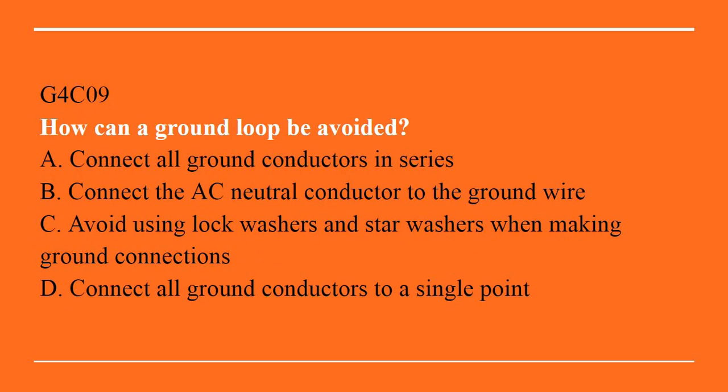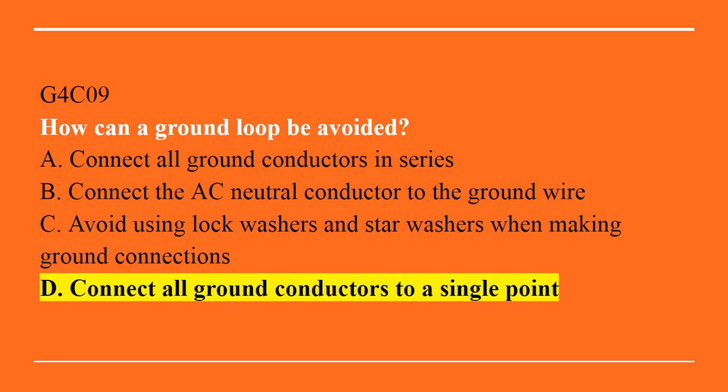G4C09: How can a ground loop be avoided? A. Connect all ground connectors in series. B. Connect the AC neutral conductor to the ground wire. C. Avoid using lock washers and star washers when making ground connections. Or D. Connect all ground connectors to a single point. The correct answer is D. Connect all ground conductors to a single point.